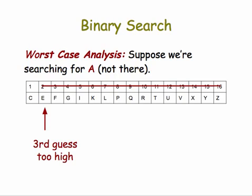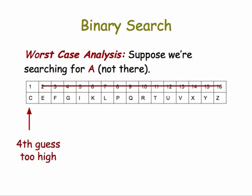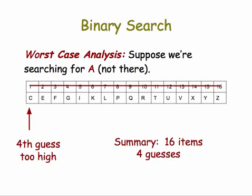And we guess at the midpoint of the one remaining sub sub sublist. That's also too high, and so the result is that the target is not found in this case. But still, to summarize, with 16 items it took us four guesses. So we've doubled the number of items from our previous example, but only took one more guess. That's the beauty of binary search.